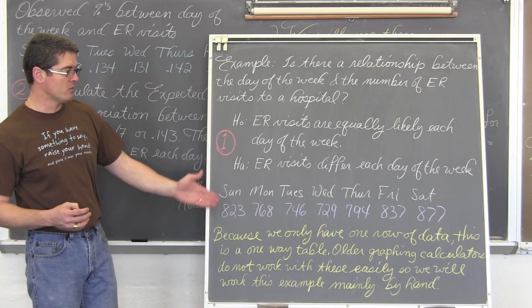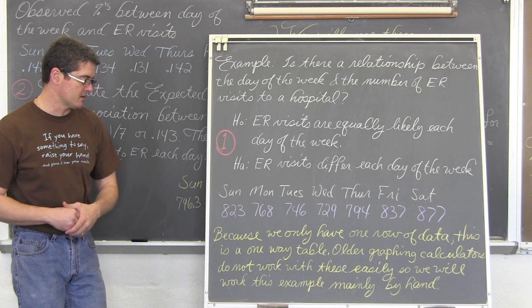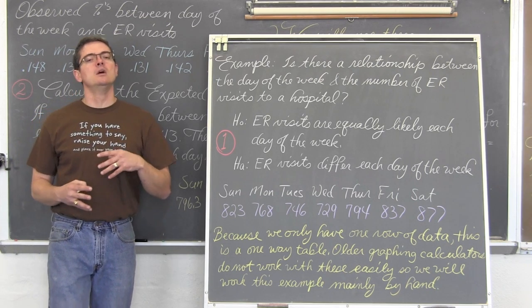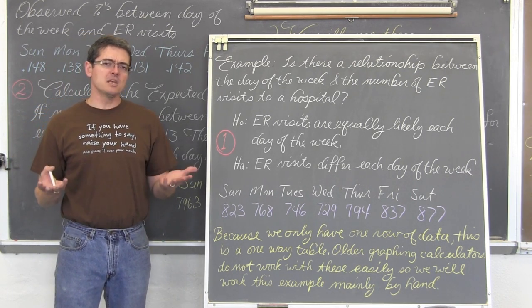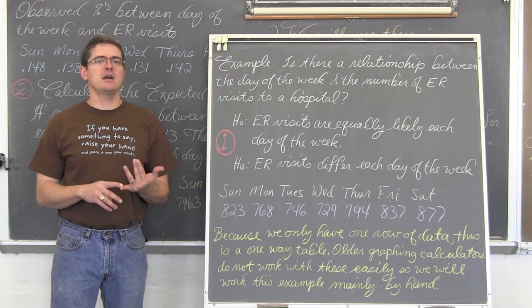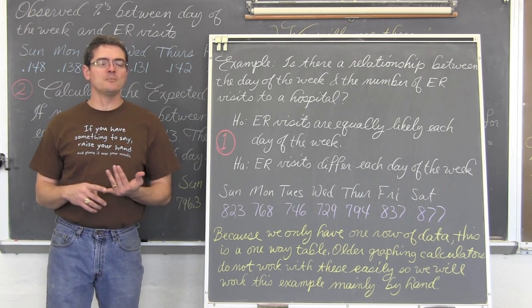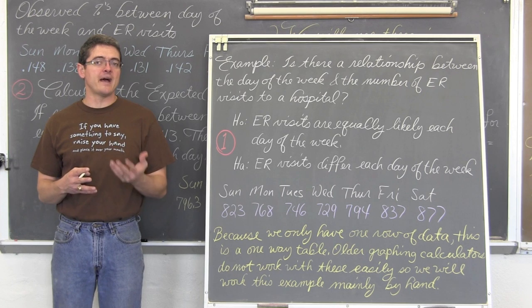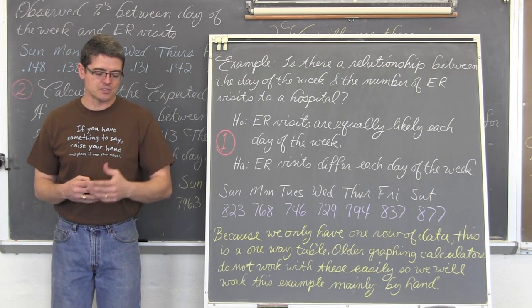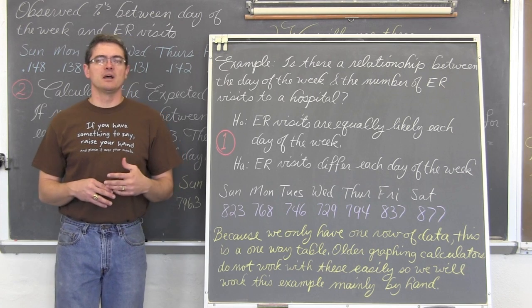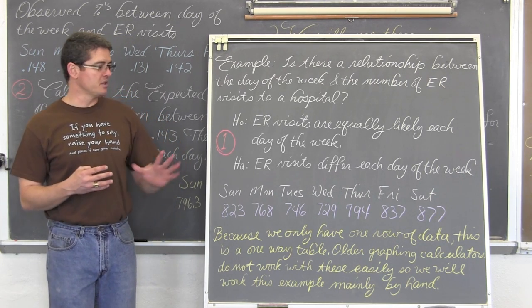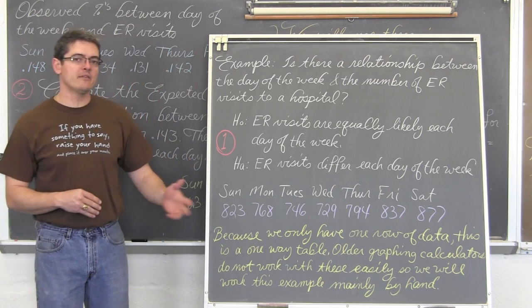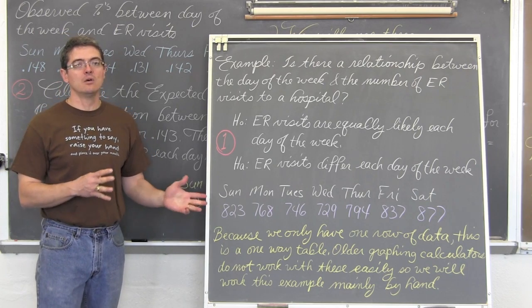Because we only have one row of data, this is a one-way table, older graphing calculators do not work with these easily. So we will do this work kind of by hand with an aid of a calculator as opposed to just, see with a newer TI-84 with the new software, or the TI-Inspire, they will do this process a bit more automatically. You will still have to find your own expected values. And if you do have an Inspire, I will be posting a video about how to do this with that calculator.